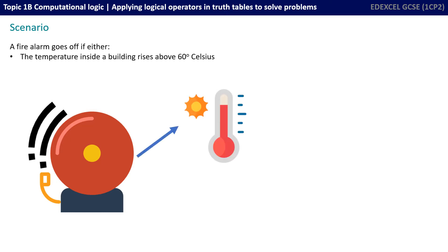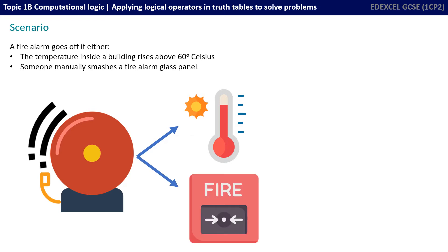The scenario: A fire alarm goes off if either the temperature inside a building rises above 60 degrees Celsius or someone manually smashes a fire alarm glass panel.